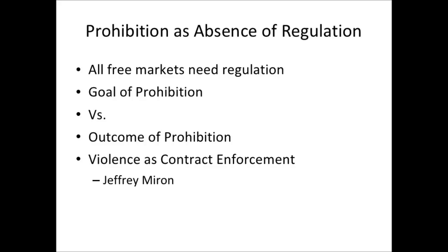The goal of prohibition is to have total regulation of the market — you're trying to stop supply meeting demand. But the actual outcome of prohibition is that you create this kind of state of nature, an utter absence of regulation. There is no regulation of the global prohibition market. Government intervenes and pushes it around a little bit, but really they have no clue what's going on. And so what you see emerge as the means of enforcing contracts is violence. Geoffrey Miron, a Harvard libertarian economist, says: if you're Benson and Hedges supplying cigarettes to a gas station, you can bring them to court if they don't pay. You have no such enforcement mechanism in the prohibitive market, so you use violence or the threat of violence. That's why you see violence in prohibitive markets.